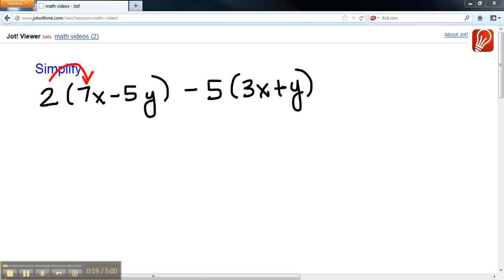So we're going to distribute the numbers through the parentheses. We're going to distribute the 2 through this parentheses, and here the negative 5 through this.